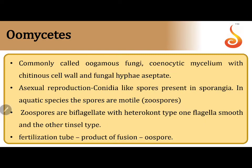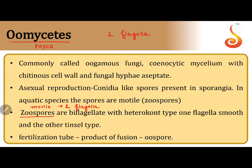We are going to discuss zoospores in oomycetes, which are otherwise phycomycetes in fungi. Zoospores are motile spores and they have two flagella. If a spore has two flagella and both flagella are the same in structure, I call the condition as homocont or isocont.